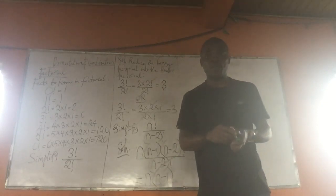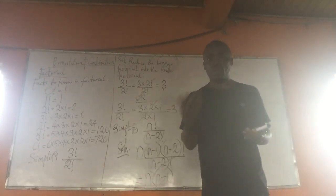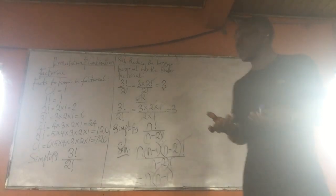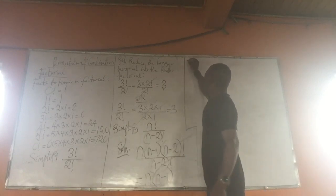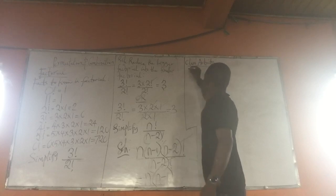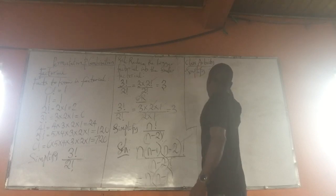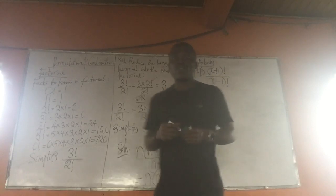So I am going to give you a question to work on. Once you are able to solve it, you can post the answer in the comment section. The question is: Simplify (x plus 1) Factorial over (x minus 1) Factorial.